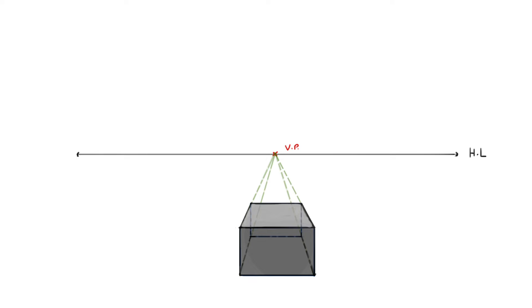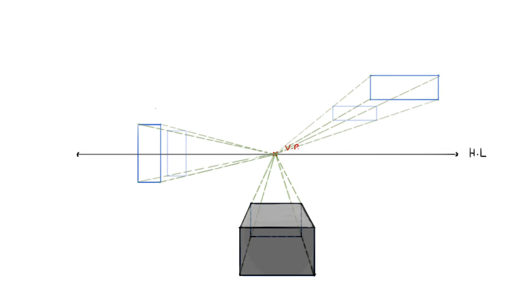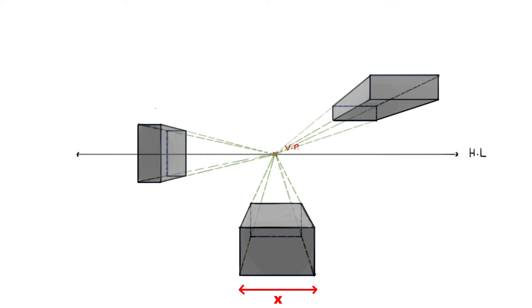We can try again by drawing 2 different rectangles at a different level this time — one at the center of the horizon and one above it. The process is the same as before: we connect the perspective lines, then decide where we want it to end and draw another rectangle there. Finally, we connect the 2 together to get our boxes. One thing to note is that in one-point perspective, the width or the x-axis of the object is parallel to the horizon line, and the height, the y-axis, is simply a vertical line or parallel to the height line. This only applies to one-point perspective; in other types, it will be different.